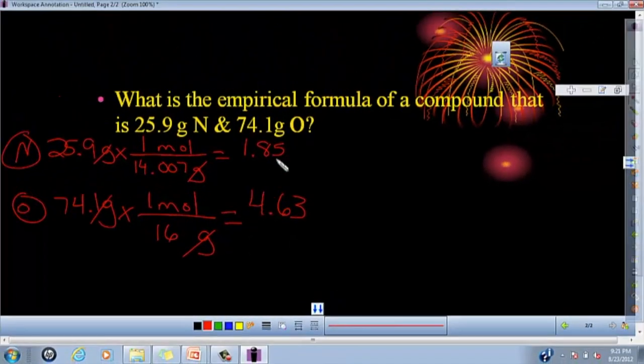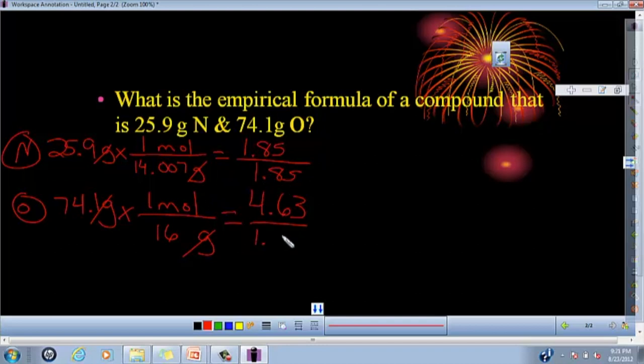The next step was look at your numbers. Which one's the smallest? This one's the smallest. So now you're going to divide both of these numbers by the smallest number. So you get 1 up here, and then down here you get 2.5.